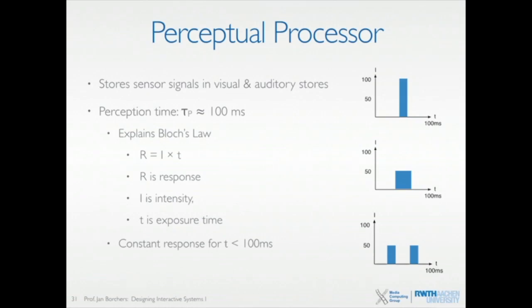This processor, or this perception time, has been measured for the CMN model at 100 milliseconds. You can imagine this to be sort of like the exposure time in a camera — you have 100 milliseconds that you take photons flying to your eye in, and with this you have your response.